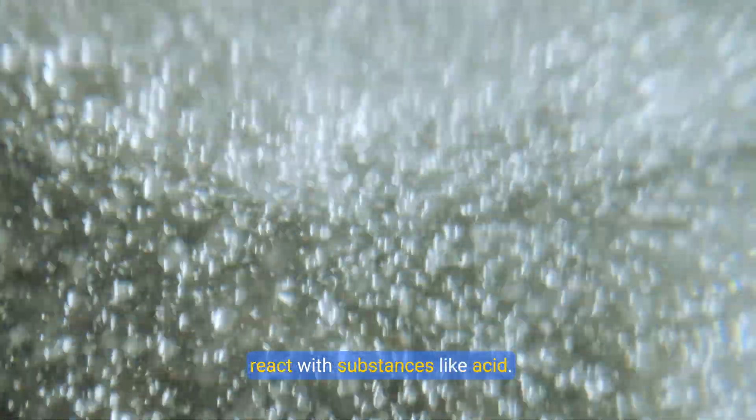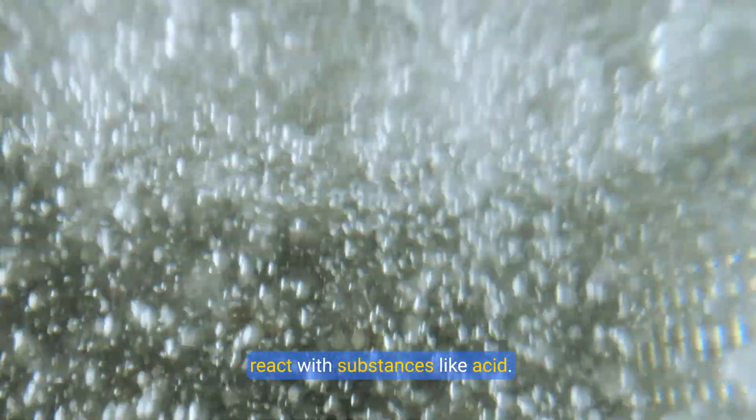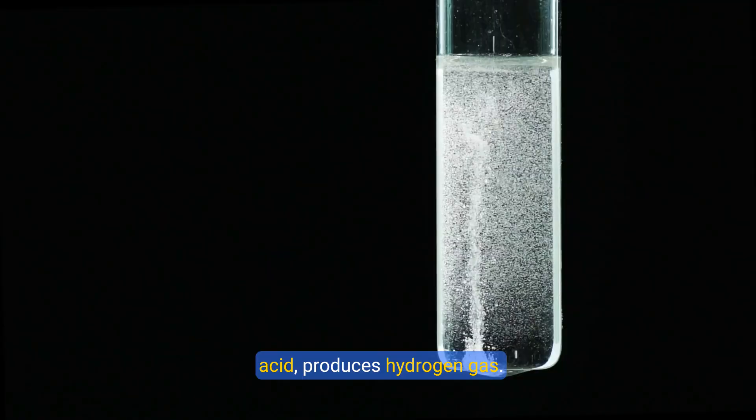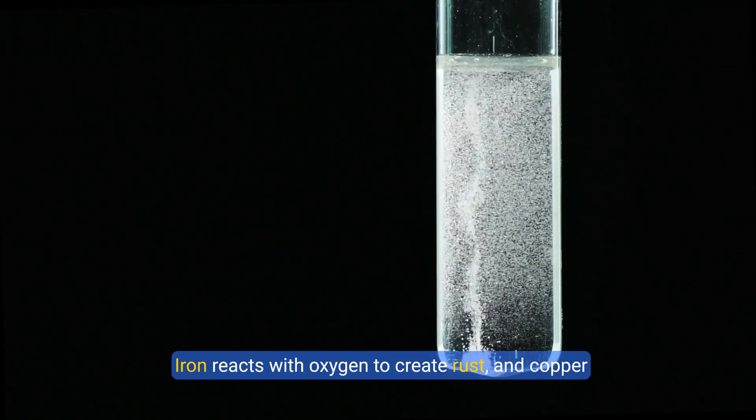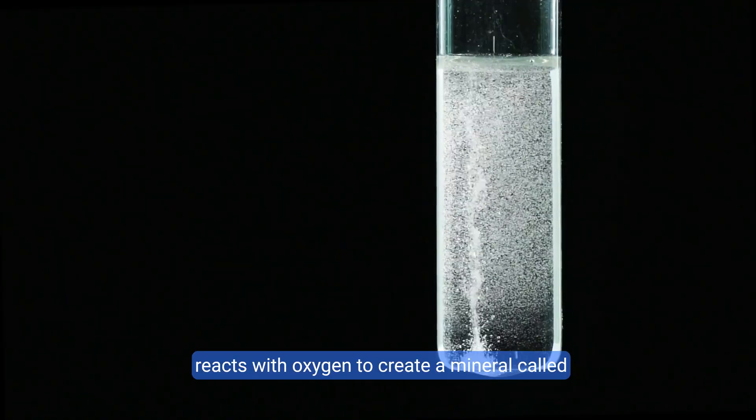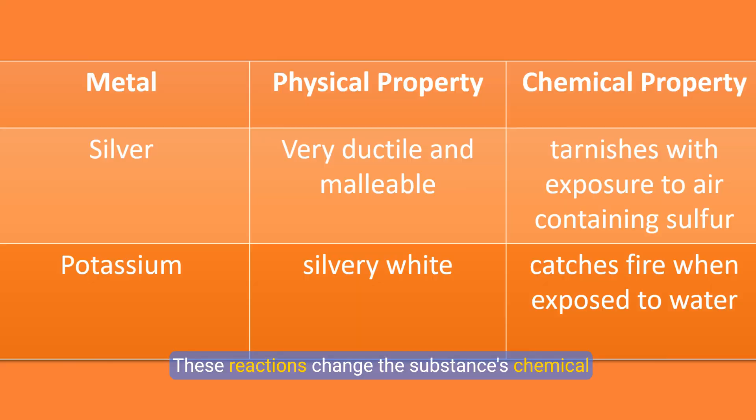Metals show their chemical properties when they react with substances like acid. Zinc, when it comes in contact with hydrochloric acid, produces hydrogen gas. Iron reacts with oxygen to create rust, and copper reacts with oxygen to create a mineral called cuprite. These reactions change the substance's chemical makeup, demonstrating their chemical properties.